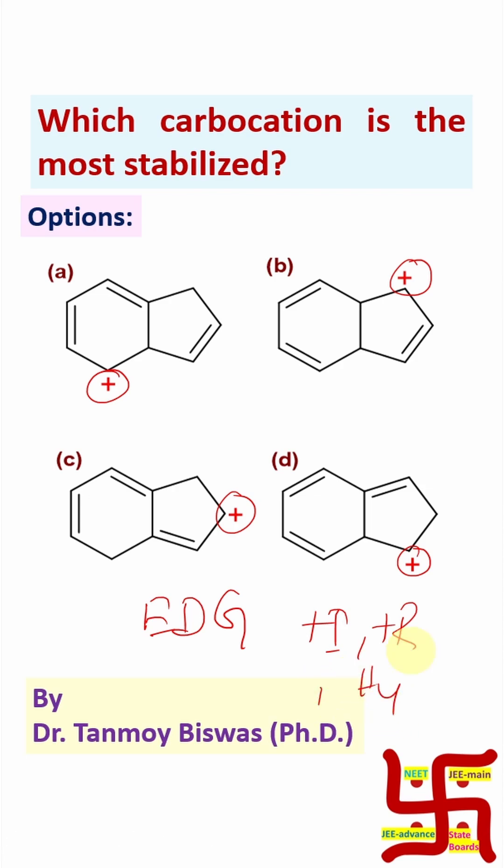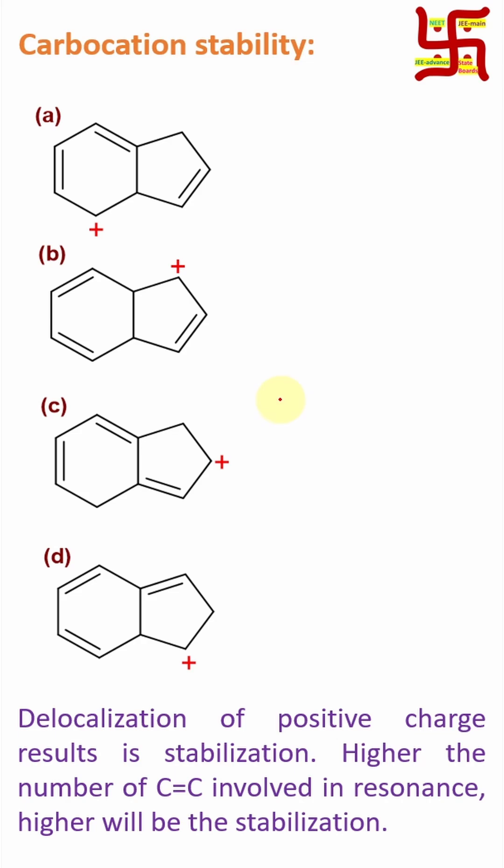Now here if you look there are lots of double bonds, so resonance or delocalization is possible. And remember delocalization of positive charge results in stabilization. And higher the number of carbon-carbon double bond or pi bond involved in resonance or delocalization, higher will be the stabilization.